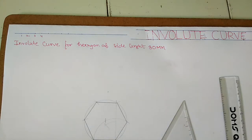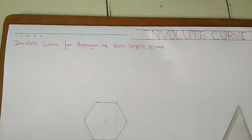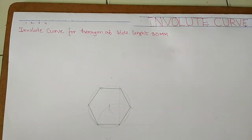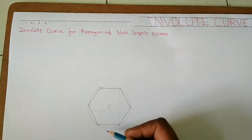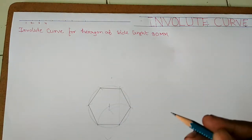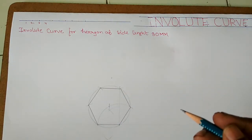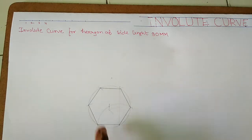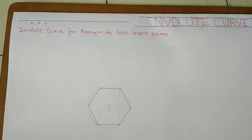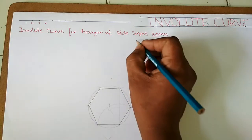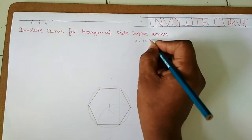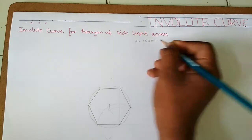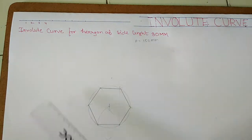This is the hexagon of the given length. The side length of the hexagon is 3 cm, so the hexagon has side 5 cm. The perimeter of the hexagon will be 15 cm, that is 150 mm, so we will draw a 150 mm length.